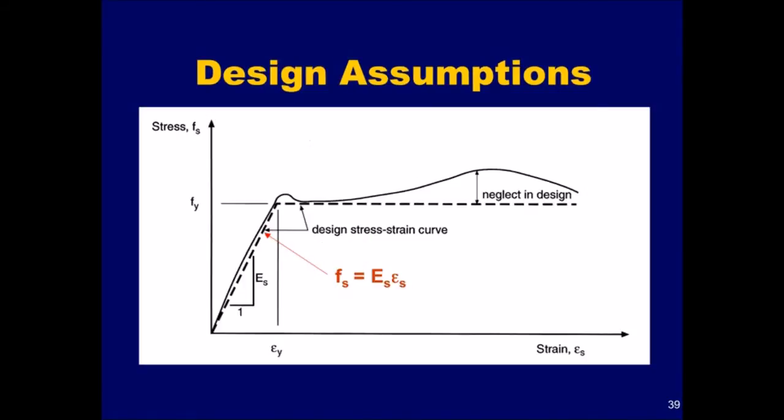The third design assumption is that the stress in the reinforcing steel is equal to the modulus of elasticity, E sub s, times the steel strain when the stress in the steel is below the specified yield stress, F sub y. This can be seen in the figure. For strains greater than the yield strain, epsilon sub y, the stress in the reinforcement is taken equal to F y. In other words, the increase in strength due to strain hardening of the reinforcement is neglected in strength computations.